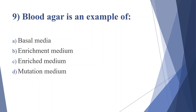Ninth question: blood agar is an example of — option A: basal media, option B: enrichment media, option C: enriched medium, option D: mutation medium. Answer is option C, enriched medium.